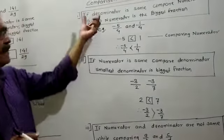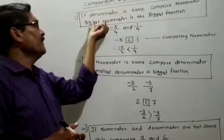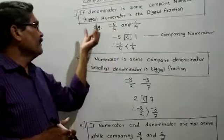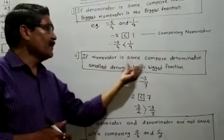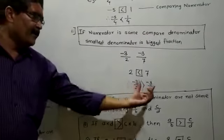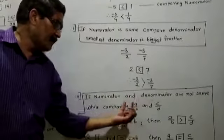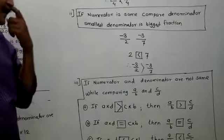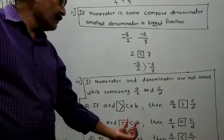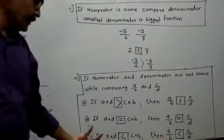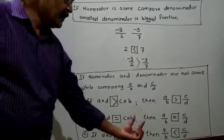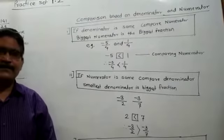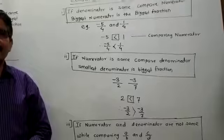Let me revise all these rules. If the denominator is the same, compare the numerator — the biggest numerator is the biggest fraction. If the numerator is the same, compare the denominator — the smallest denominator is the biggest fraction. If neither is the same, find the products A×D and C×B: if A×D is greater than C×B then A/B > C/D; if A×D equals C×B then A/B = C/D; if A×D is less than C×B then A/B < C/D. Write these rules in your classwork notebook and in the basic notebook. Thank you.